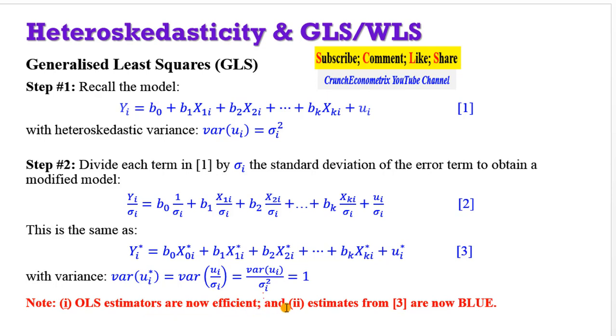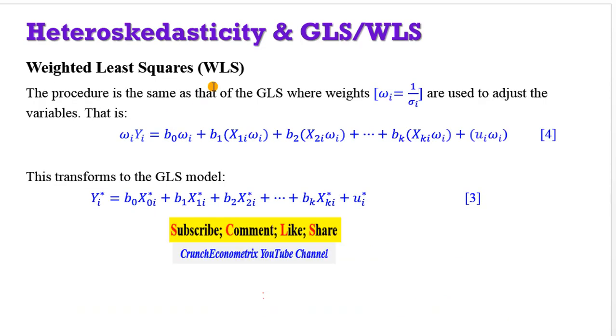For the weighted least squares, it is the same procedure as the GLS, where in this case weights are used to adjust the variable. The weight in this case is 1 over sigma i, which is the same thing that was done on that GLS. So by the time equation 1 is multiplied by the weights, we have equation 4 as shown on the screen, which is the same thing as equation 3 for the GLS model. So the GLS and the WLS can be used synonymously. You are going to get the same results.